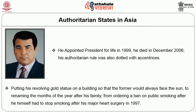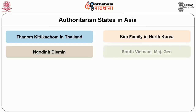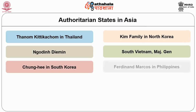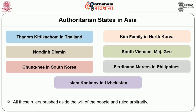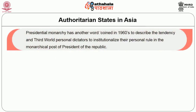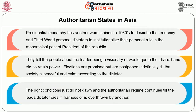Examples of authoritarian rule in Asia are many: Thanom Kittikachorn in Thailand, the Kim family in North Korea, Ngo Dinh Diem in South Vietnam, Major General President Park Chung-hee in South Korea, Ferdinand Marcos in the Philippines, and Islam Karimov in Uzbekistan. All these rulers brushed aside the will of the people and ruled arbitrarily. Presidential monarchy was another term coined in the 1960s to describe the tendency in the third world where personal dictators institutionalize their rule in the monarchical post of president of the republic. They invoke a divine hand or claim the leader is a visionary to retain power, while elections are promised but postponed indefinitely until the dictator dies or is overthrown.